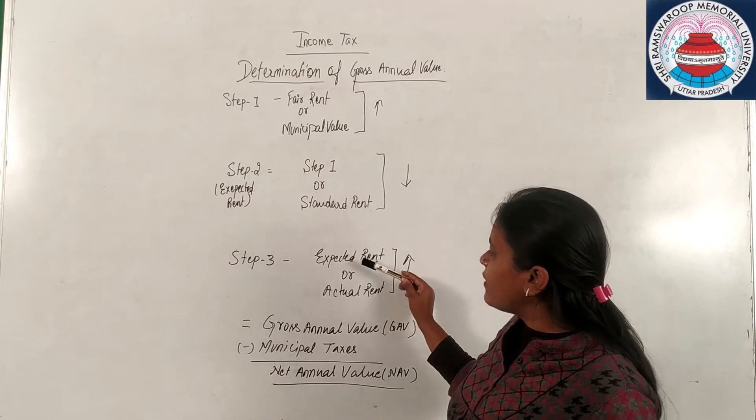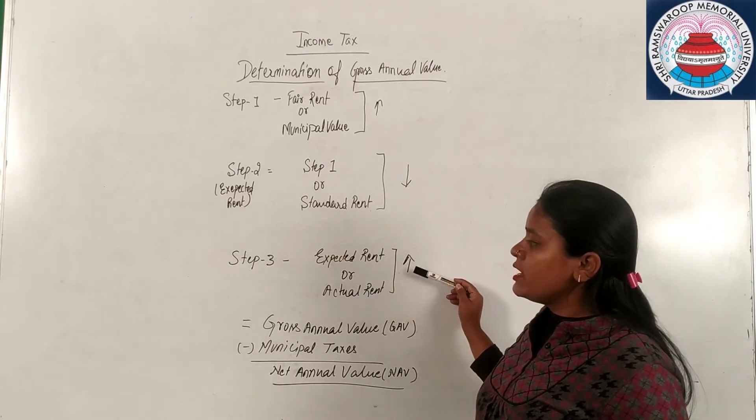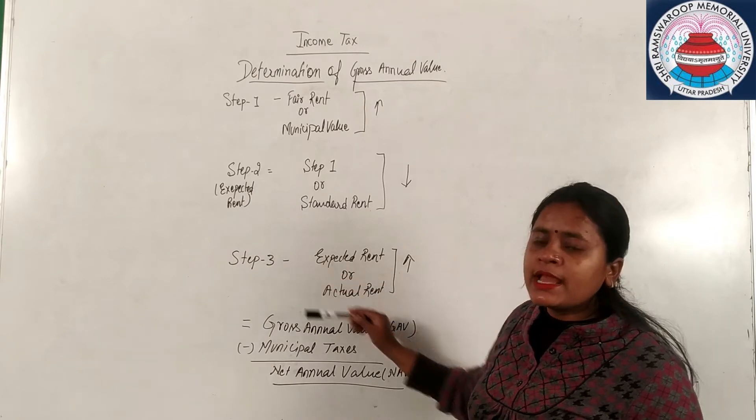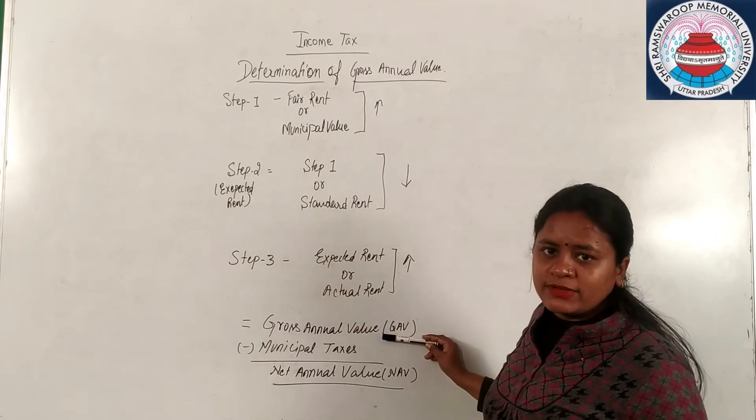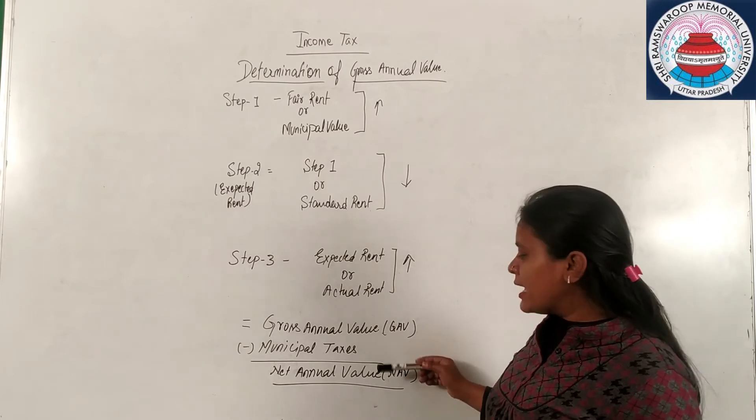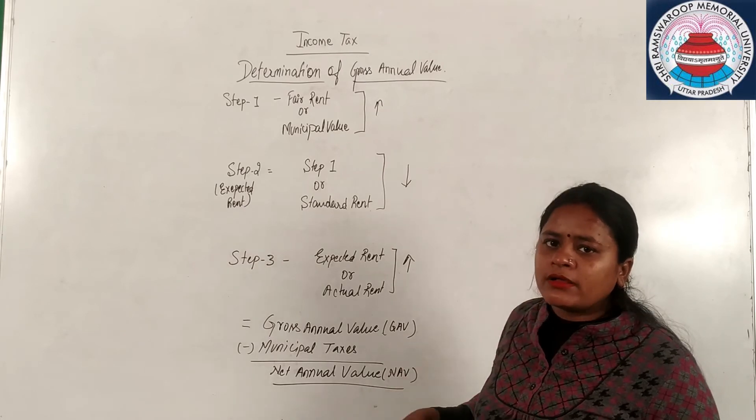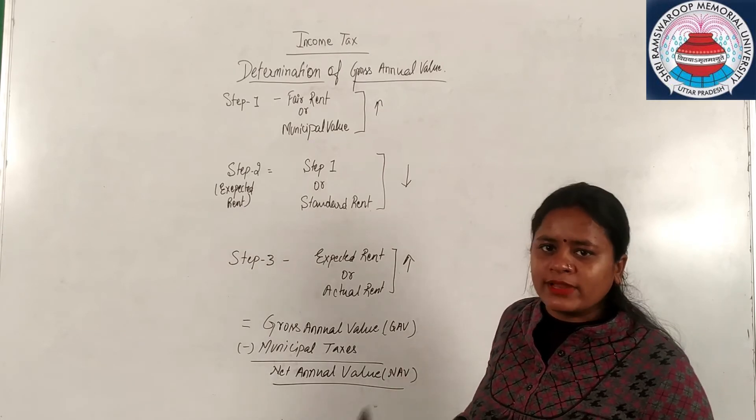In step three we have expected rent or actual rent whichever is higher will be your step three and answer will be gross annual value. We will deduct municipal taxes from gross annual value then we will get net annual value here. Now we will take the example of this and we will compute this.